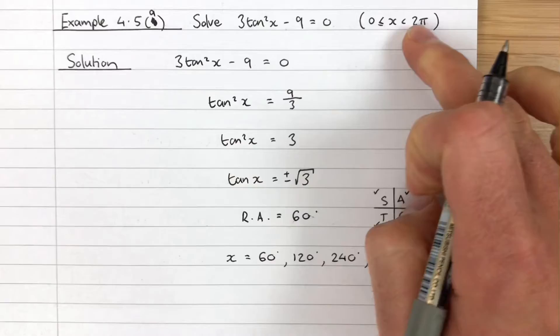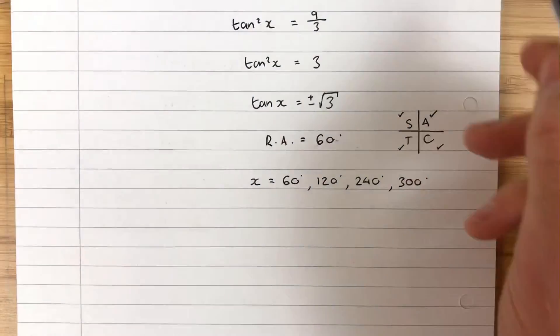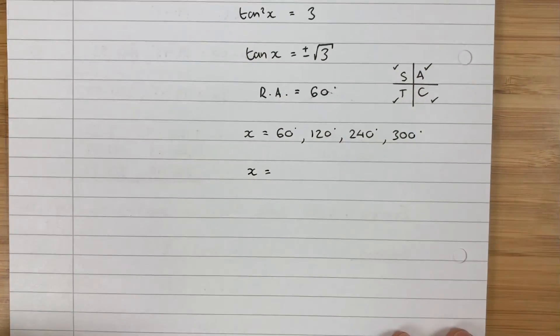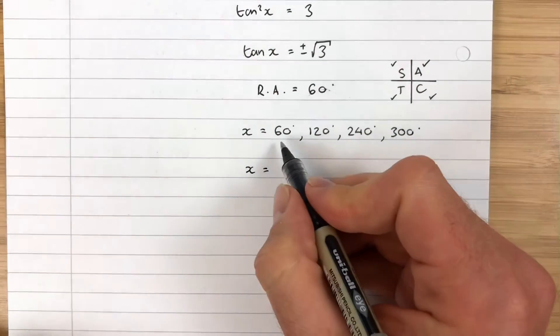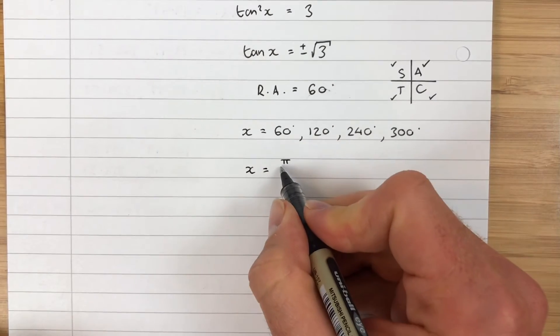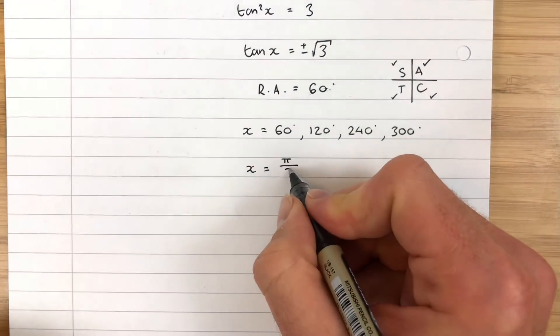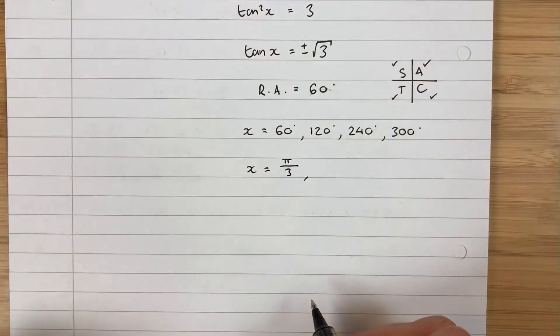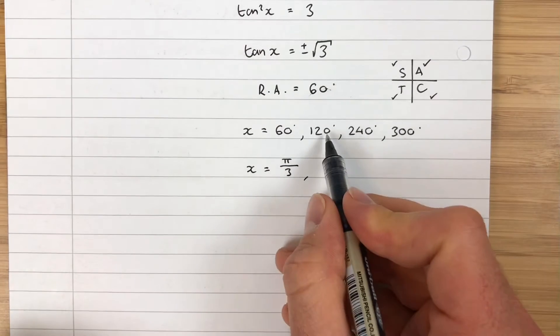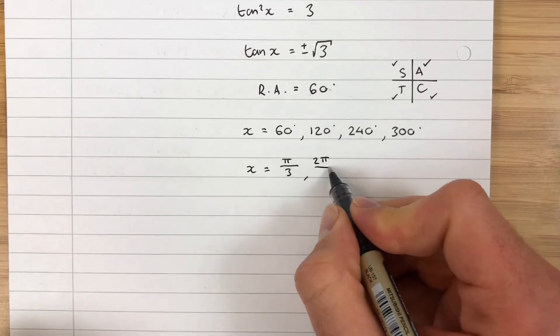So I have four answers. If this had said between 0 and 360 I would be done. But it didn't say that, it said between 0 and 2π. So therefore my final step is to convert those into radians. 60 is π/3. How many times does 60 go into 120? Twice. So 2π/3.